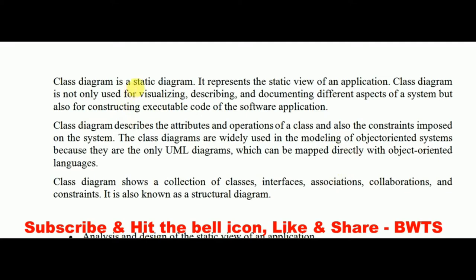So what is a class diagram? Class diagram is a static diagram. What is the meaning of static? It cannot be changed. Dynamic means it can be easily changed — the changes can be made very easily. Coming to static, it is fixed. So class diagram is a static diagram and it represents the static view.